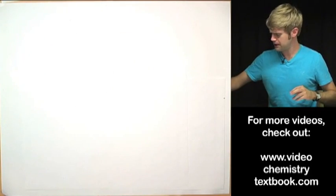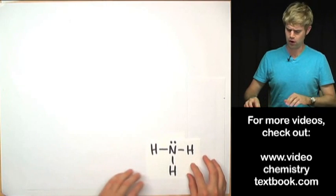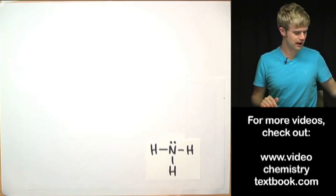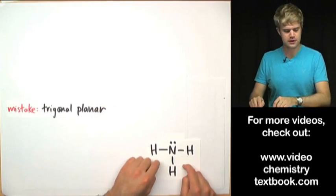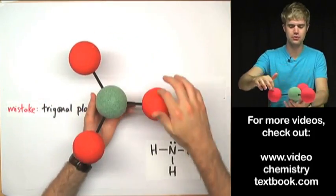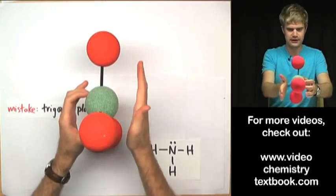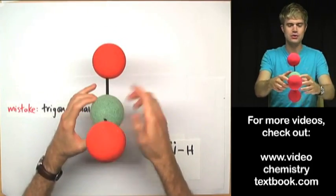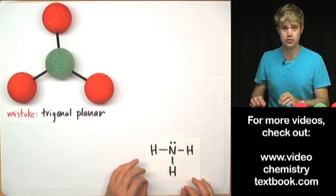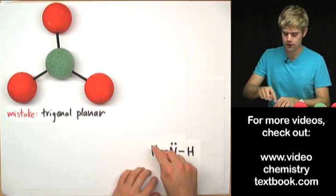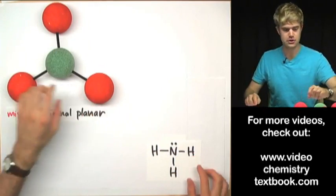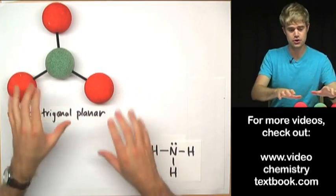Here's the first example: NH3, or ammonia. What does it look like in three dimensions — what's its VSEPR shape? One of the biggest mistakes is people look at this molecule and think that it's trigonal planar. A trigonal planar molecule has three atoms around the outside, all flat in a plane. I think people make this mistake because they see one atom in the center — the N — and three atoms arranged around the outside, so they come up with that wrong idea.